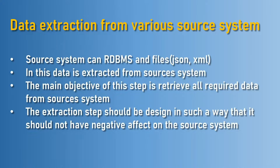Let's look at the first step: data extraction from various source systems. Source systems can be RDBMS and files — some files are in JSON format and some are in XML format. The data is extracted from the source system, and the main objective of this step is to retrieve all the required data from the source system. The design of the extraction step should be such that it does not have a negative effect on the source system.